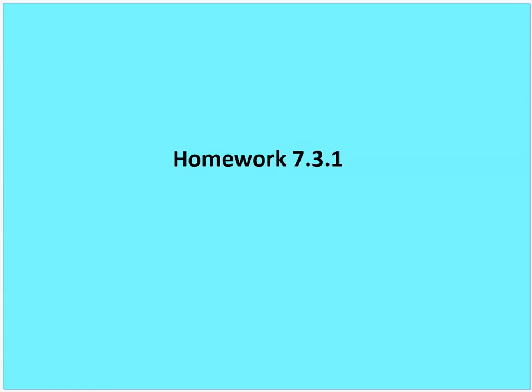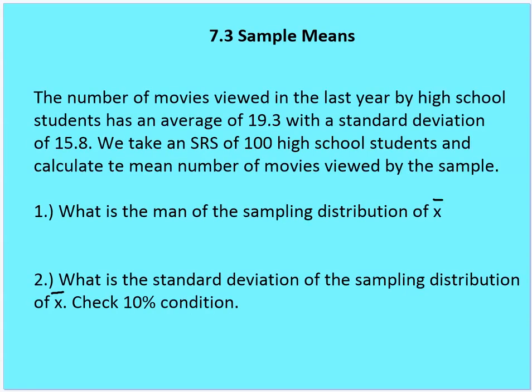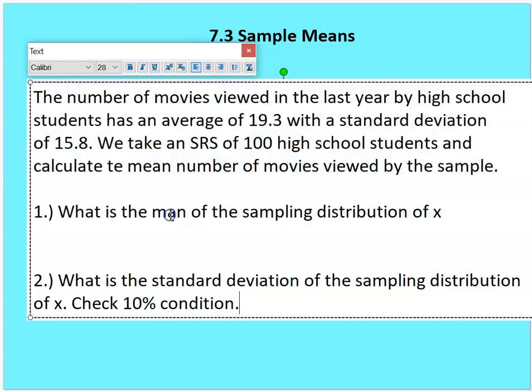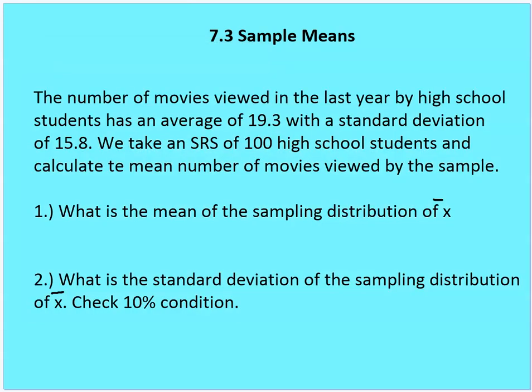Here is your homework, 7.3.1. The number of movies viewed in the last year by high school students has an average of 19.3 with a standard deviation of 15.8. We take an SRS of 100 high school students and calculate the mean number of movies viewed by the sample. What is the mean of the sampling distribution? What is the standard deviation of the sampling distribution? And check that the 10% condition is met.